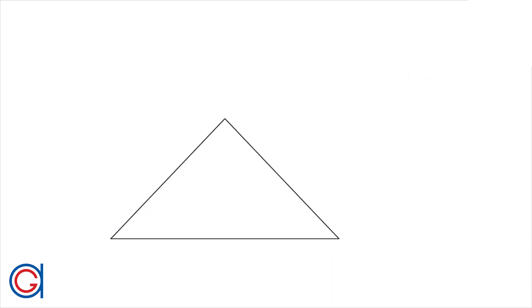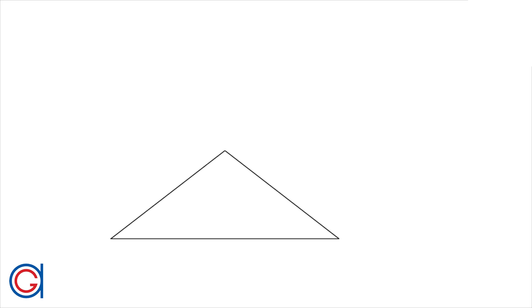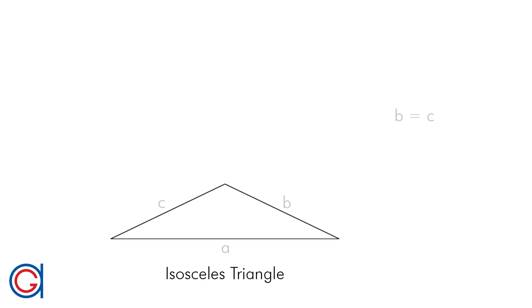The next triangle, according to their sides, is called the isosceles triangle. This triangle has only 2 equal sides, B and C, and 2 equal angles, B and C also.